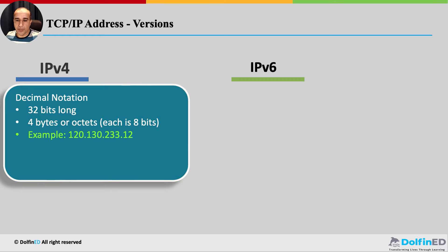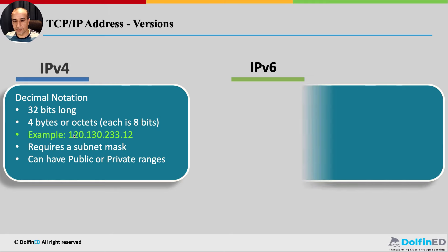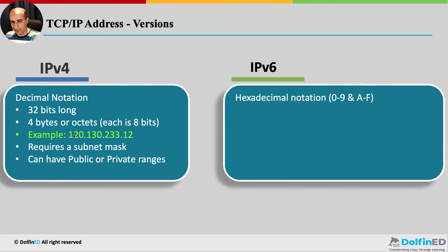An example IPv4 address is 120.130.233.12 — four octets of eight bits each. The number in any one of these octets cannot exceed 255 and cannot be less than zero. IPv4 requires a subnet mask, and it can be a public or private IP address.